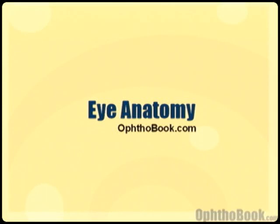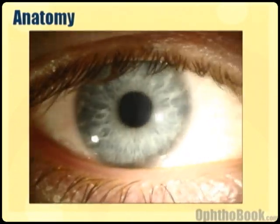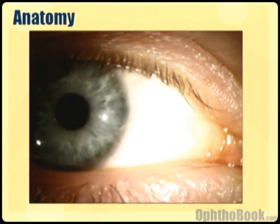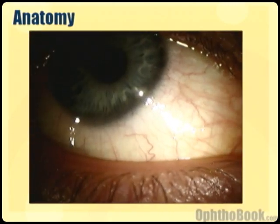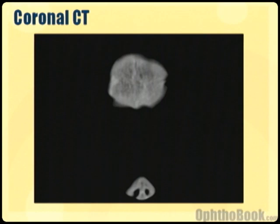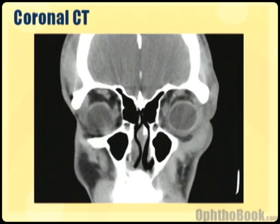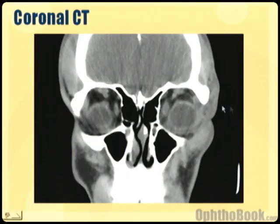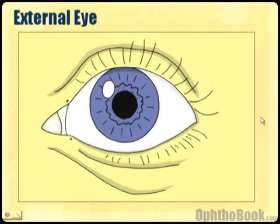Let's talk about some eye anatomy. In this video I'm going to go over some anatomy of the front part of the eye and some of the microscopic stuff you're going to see. I'm also going to go over some CT scans and the muscles of the eye, the bones of the eye. So let's go ahead and get started with the basics, which would be the external exam.